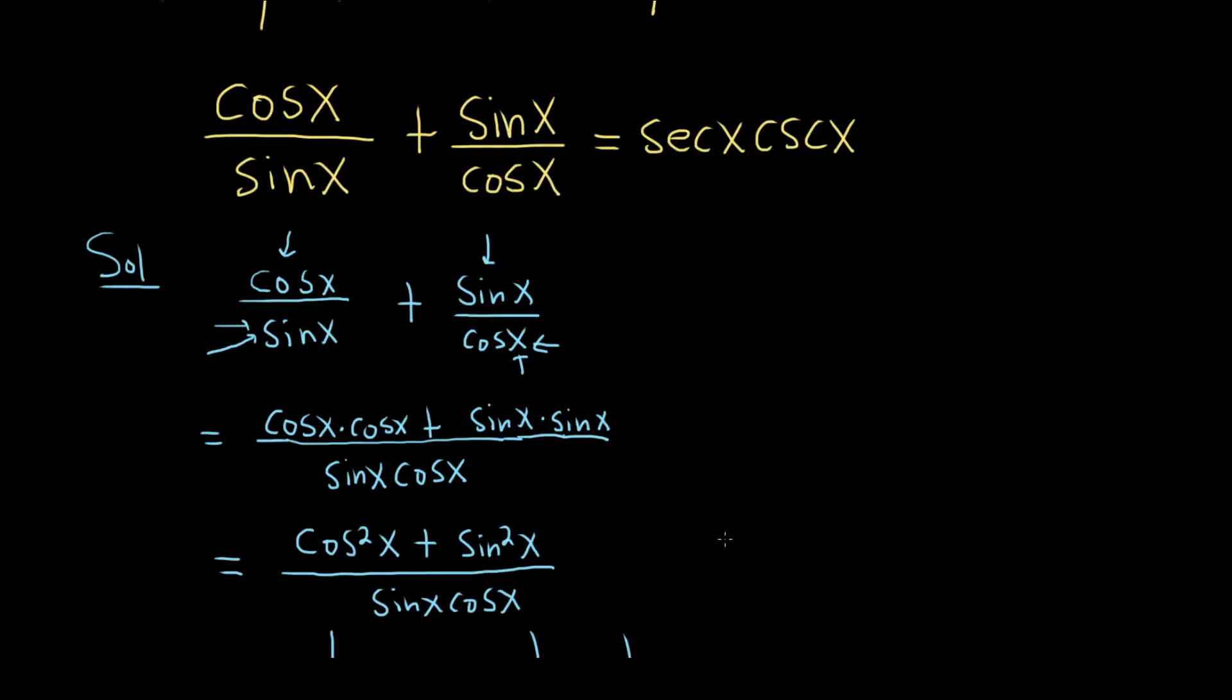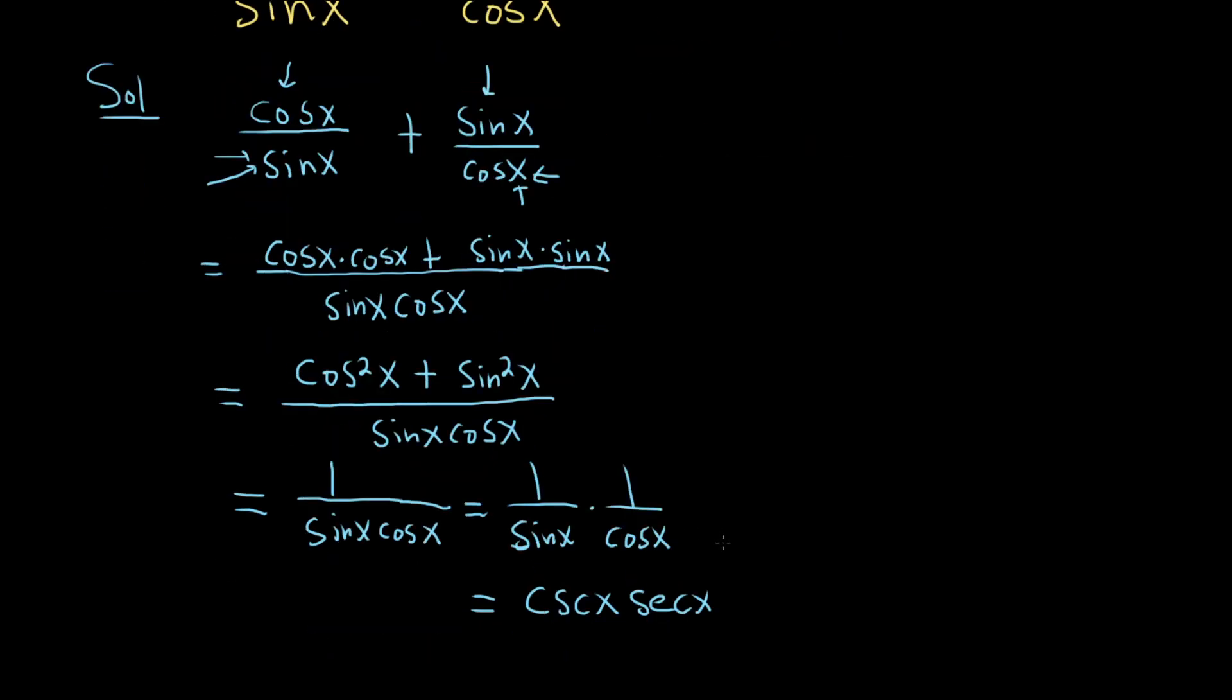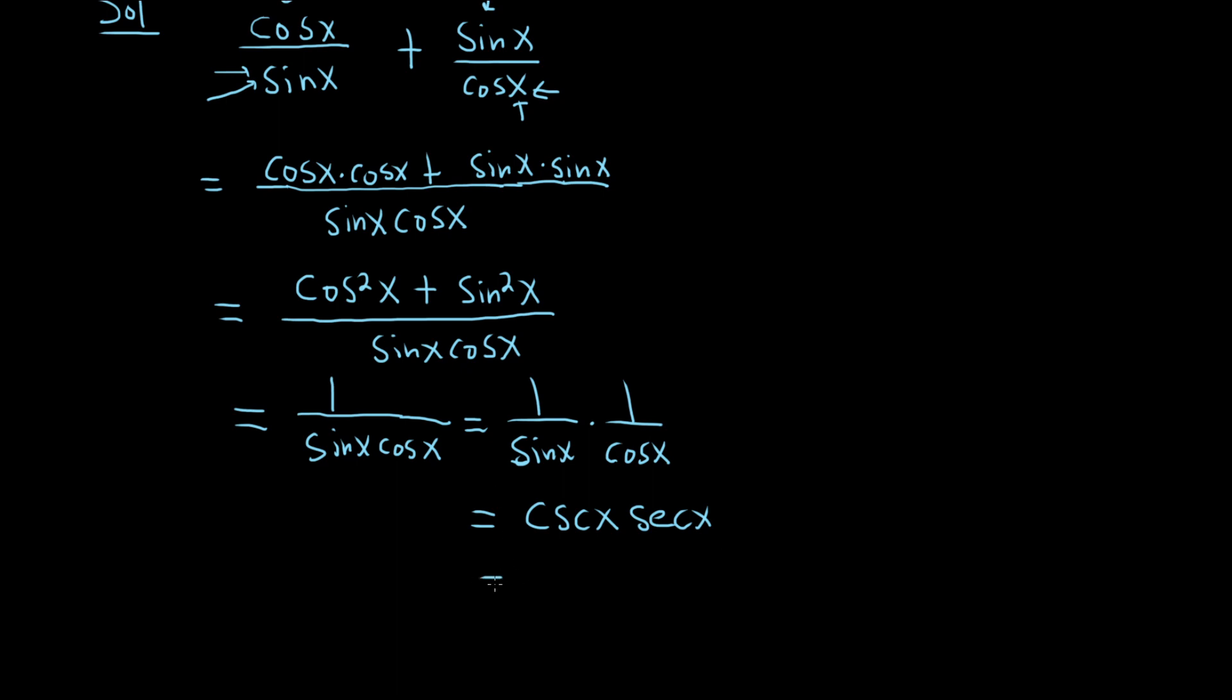And we're pretty much there. The original question said secant cosecant. So let's go ahead and write it that way. So this is really equal to secant x times cosecant x. And that's it. I hope this video has been helpful.